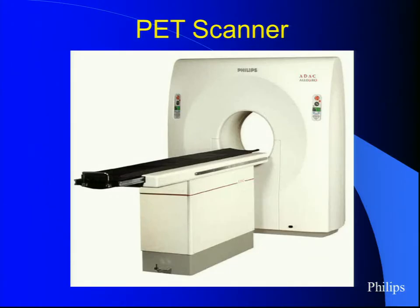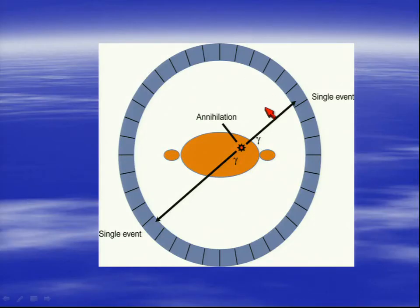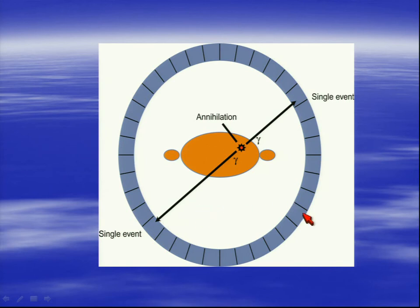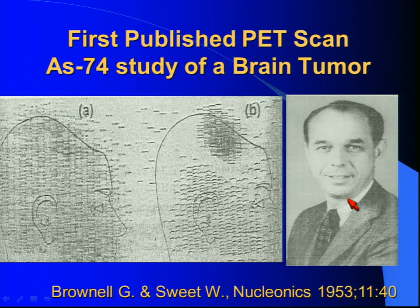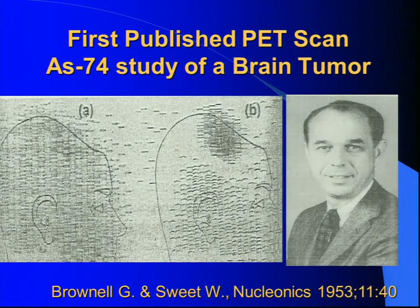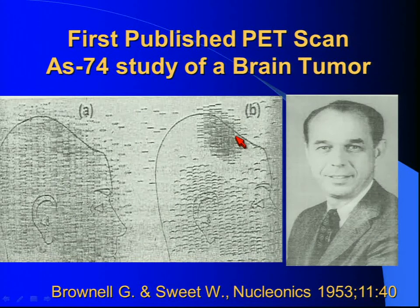Here's what a PET scanner looks like — it looks like a CAT scanner. When the patient's inside, the signal from the isotope goes to a whole set of detectors around the patient. Simultaneously, it goes 180 degrees, giving us very precise localization of what's going on. This is the very first PET scan ever performed. Dr. Brownell was up in Boston, and this was published in 1953. He had very crude instruments compared to what we have now. This was a tumor, and he used a positron isotope — that's what PET stands for — arsenic-74.